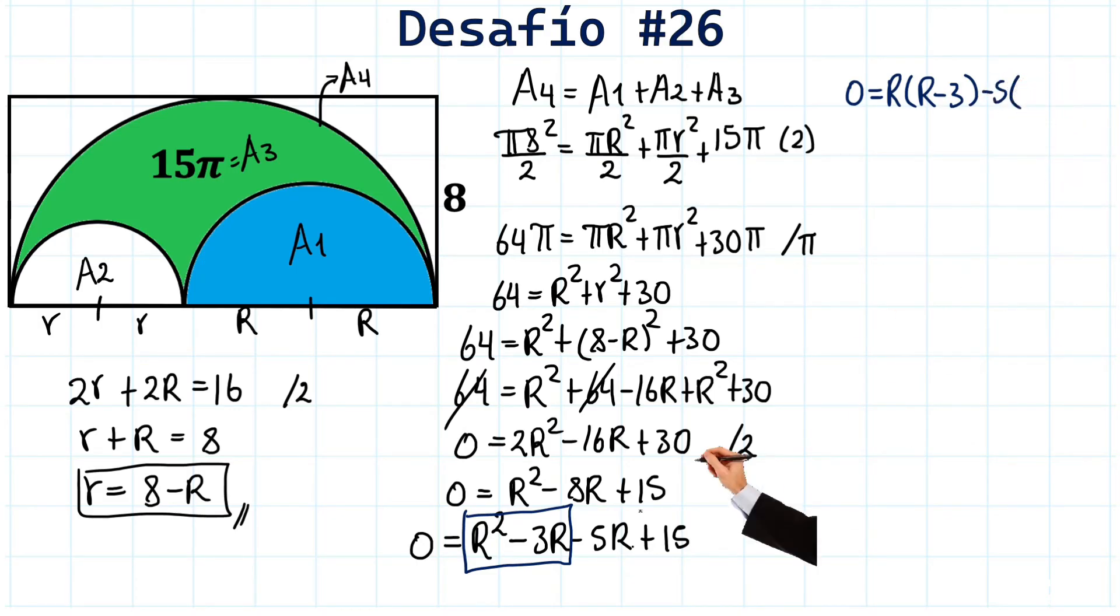And now here, factoring out the 5, the negative 5. We are going to factor out the negative 5. Inside the parenthesis goes this R. Minus 5 times R would give us this minus 5R. And to get 15, we have to multiply by minus 3.